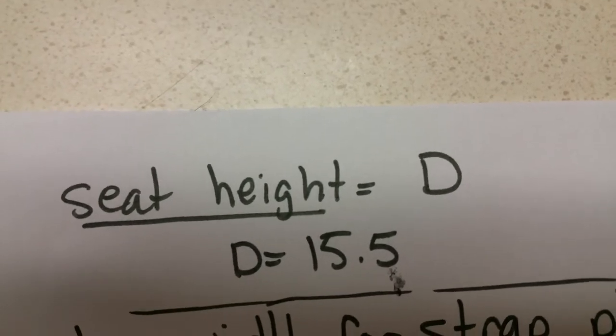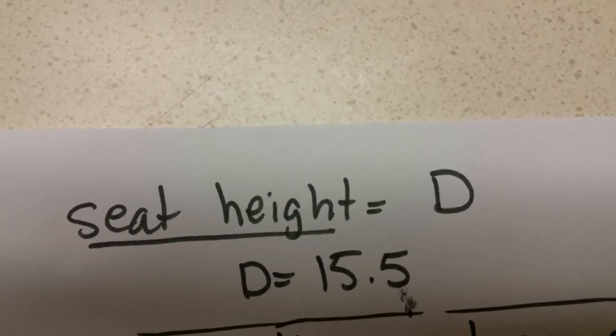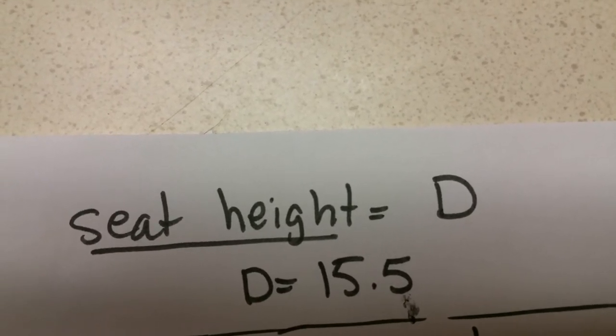To figure out the seat height we simply use the D measurement, the height from the ground up to the center between the dog's legs.